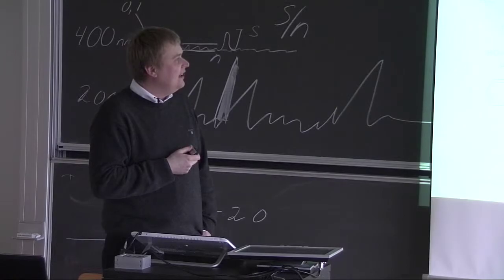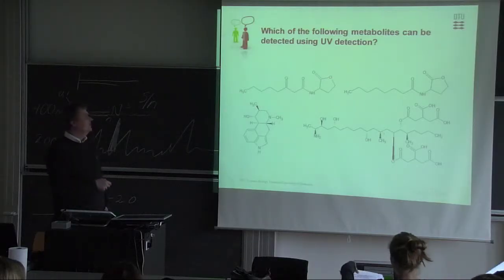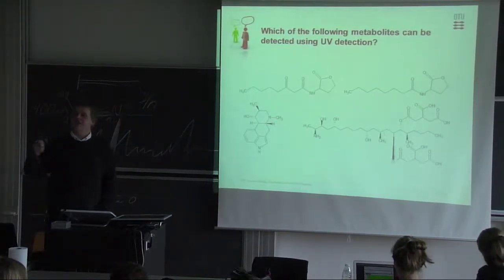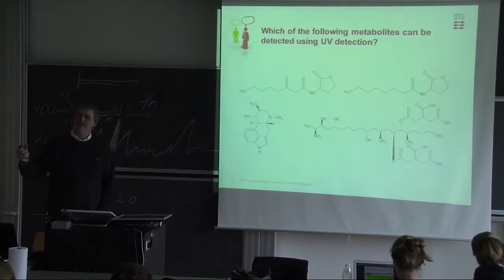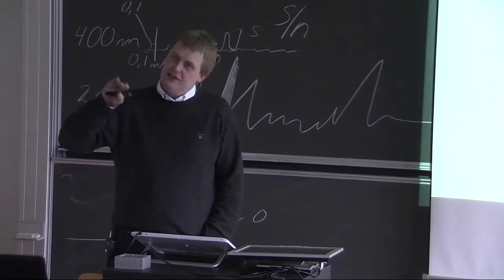If I say that there's probably only one we can detect of these, which one? Here we have our conjugated double bonds. This one you cannot see. And these two, especially this one, if you inject a very high amount and have absolutely just pure solvents, you're going to see a very small peak.